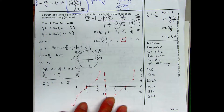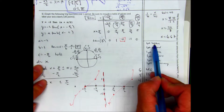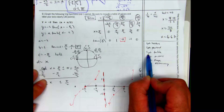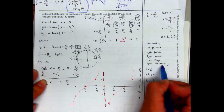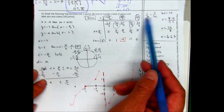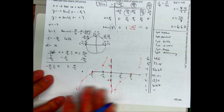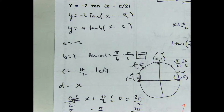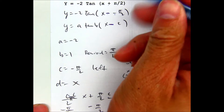Last question: graph the following trig function over one period, including a table of values with labeled axes. I asked for letters A, B, C, D; the period; a table of values; correct x-intercepts; the shape of the graph; and one point for accuracy. For the function -2tan(x + π/2): anytime you see a plus sign, change it to a minus and negative π/2, because the formula has a minus sign. This identifies the phase shift.